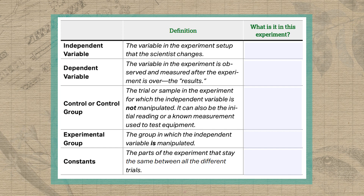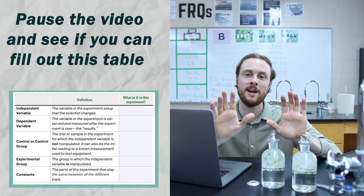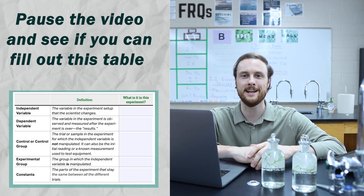Now, while we wait for our guppy grass to do some photosynthesizing, let's take a minute to review the variables, constants, and controls for this experiment. What I love about the format of these new AP Classroom Labs is that they give you this handy little table you can fill out to keep track of your variables, groups, and constants. If you're a teacher watching this video, there's a Google Doc in the video description below, all formatted and ready to print. And if you're up for a challenge, pause the video now and see if you can fill out the variables, groups, and constants.